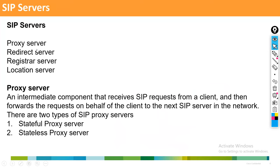The different types of SIP servers are: Proxy Server, Redirect Server, Register Server, and Location Server. Under proxy server, there are two types: stateful and stateless. Proxy servers are mainly used for security purposes, acting as intermediaries.